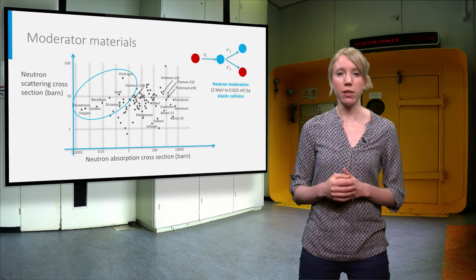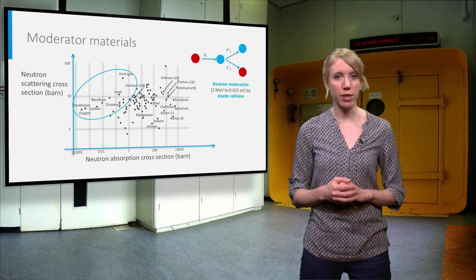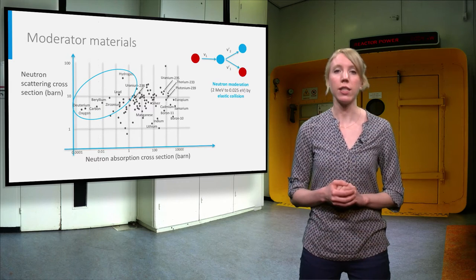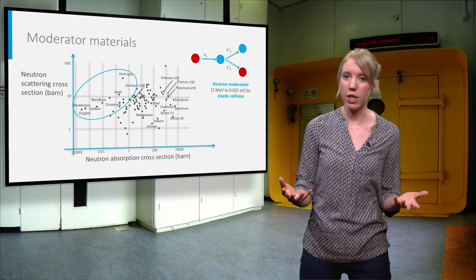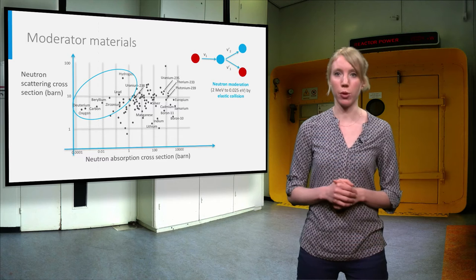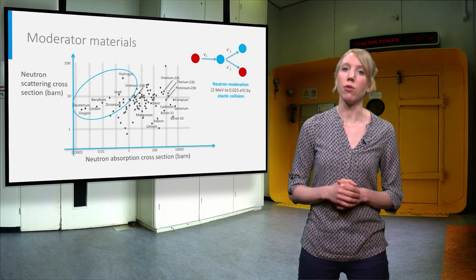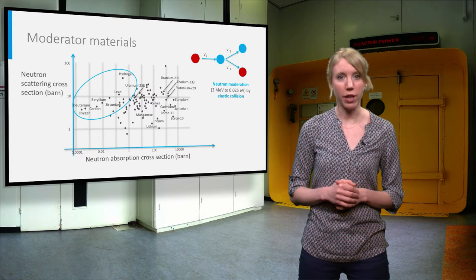Good moderators have a high scattering cross-section but a low absorption cross-section, since absorption leads to transmutation and unwanted fission products. They are found on the upper left corner of the figure.